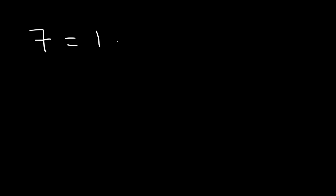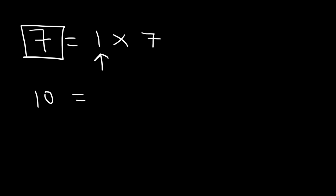Seven is a prime number because 7 equals 1 times 7. Anytime 1 is one of the factors, that number is a prime number. If we take 10, it can be broken down into two prime numbers — neither of which is 1. We can write it as 2 times 5. If you can break a number down into prime numbers that don't contain 1, then that original number is a composite number.